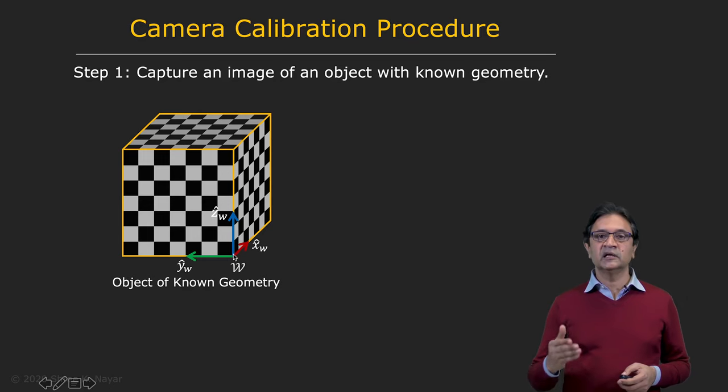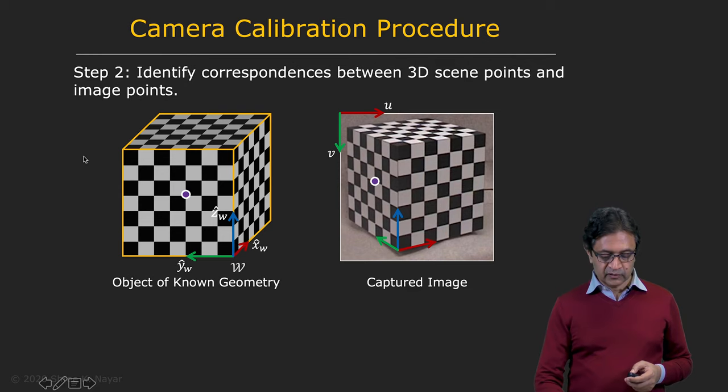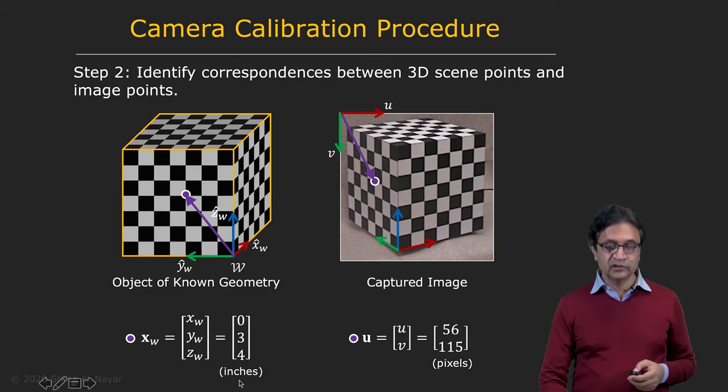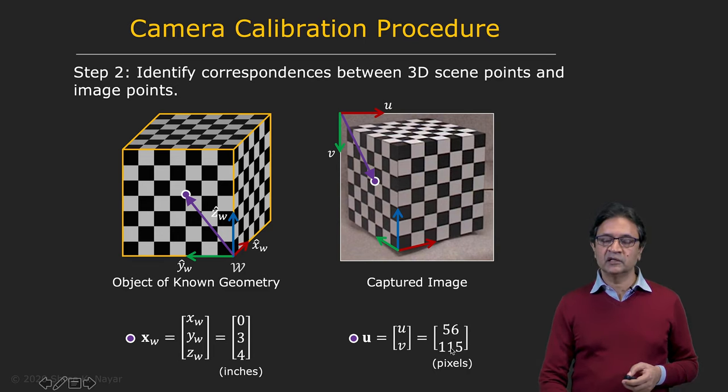And now we take a single image of this cube, which looks like this. So if you consider a single point here, say this point, we know its world coordinates X_W, Y_W, Z_W. Let's say that happens to be 0, 3 and 4 in inches in the world coordinate frame. And we know its image location UV, which is two dimensional, of course, UV. And that, let's say, happens to be 56 and 115 pixels.